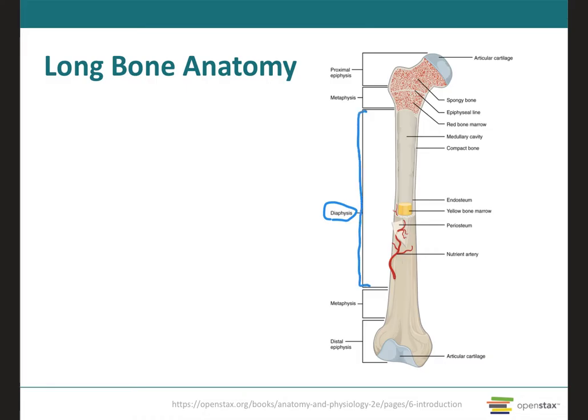The epiphysis is located at the extremities of the bone, so we have two of them: a proximal one that's closer to the torso, and a distal epiphysis at the distal end of the bone.